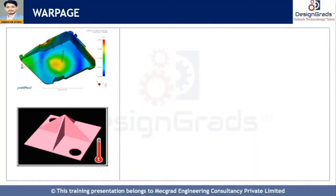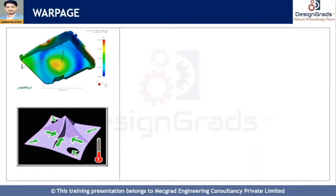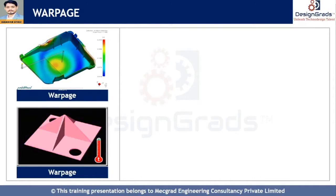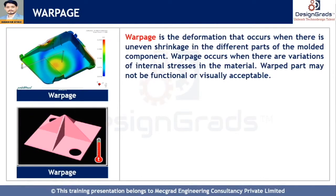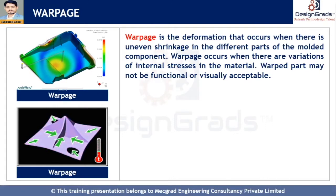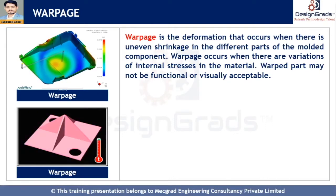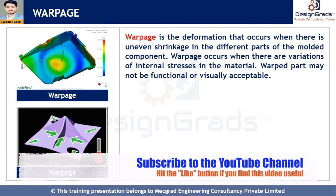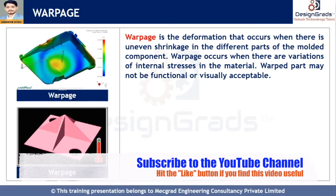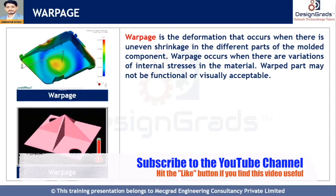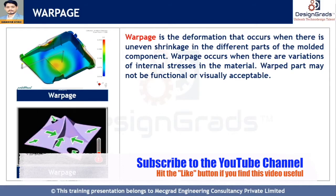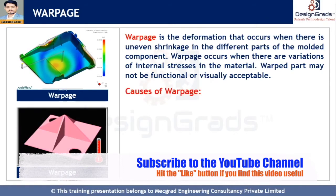What is warpage? Warpage is the deformation that occurs when there is uneven shrinkage in the different parts of the molded component. The result is a twisted, uneven, or bent shape which was not intended. Warpage occurs when there are variations of internal stresses in the material caused by a variation in shrinkage. The warped parts may not be functional or visually acceptable.